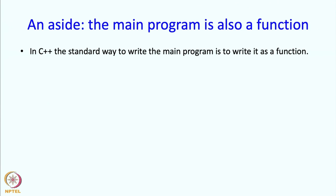In C++, the standard way to write the main program is to write it as a function. The function must be named 'main' and its return type must be int. Why int? That is really for some historical reasons — the main program is not really returning anything meaningful, but for historical reasons it has stuck that its return type must be int.